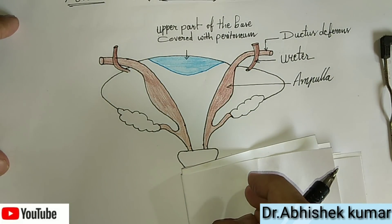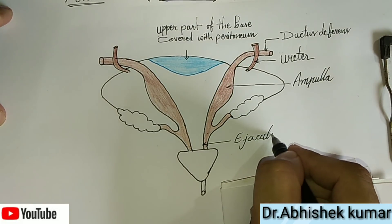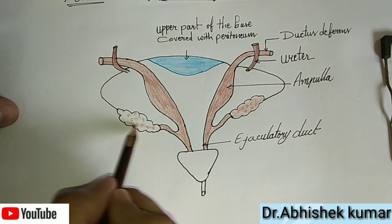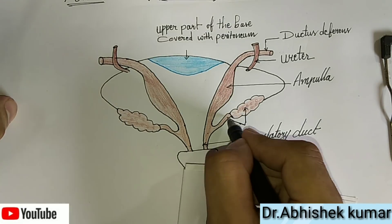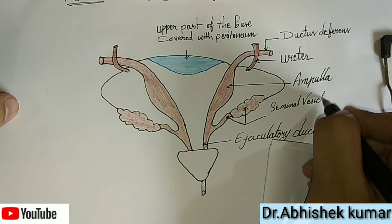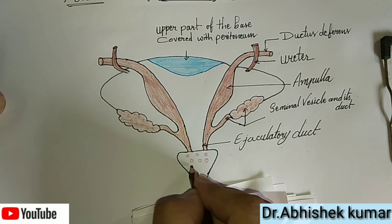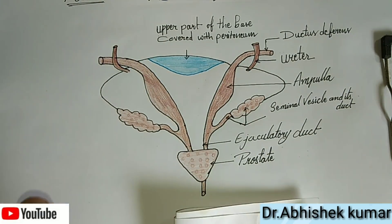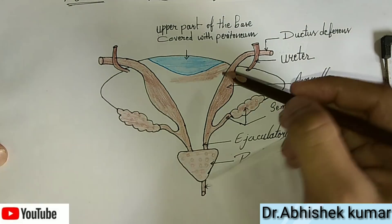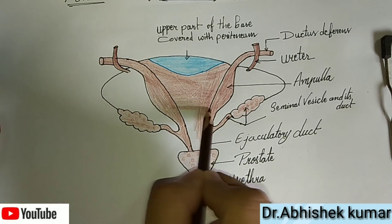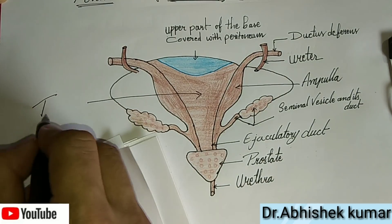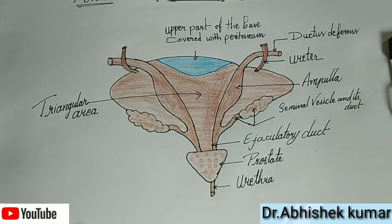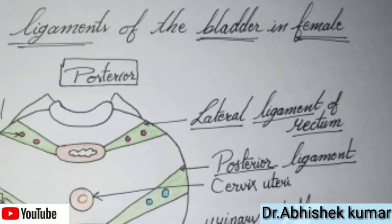The ejaculatory duct is present on both sides. The seminal vesicle is present on both sides along with its duct. In the posterior view of the urinary bladder, the prostate is also present, and below it the urethra is also there. The triangular area visible here is called the triangular area — you can see its exact triangular shape. This completes the posterior view of the urinary bladder and its relations.